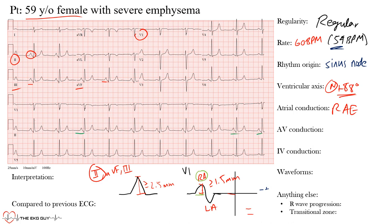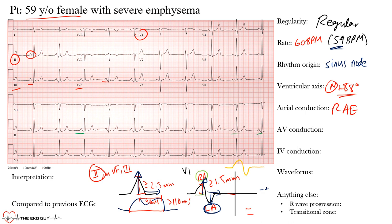With right atrial enlargement, we see peaking — increased amplitude — of the P-waves. With left atrial enlargement, you'd see increased depth and duration of the terminal portion: the two peaks should be at least 40 ms (one small box) apart, total P-wave duration greater than 110 ms (three small boxes). In V1, the terminal component should be at least 1 mm by 1 mm for left atrial enlargement. In this case, right atrial enlargement is present.